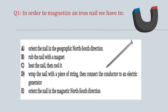Question No. 11. In order to magnetize an iron nail, we have to: A. Orient the nail in the geographic north-south direction. B. Rub the nail with a magnet. C. Heat the nail then cool it. D. Wrap the nail with a piece of string, then connect the conductor with a piece of generator. E. Orient the nail in the magnetic north-south direction.